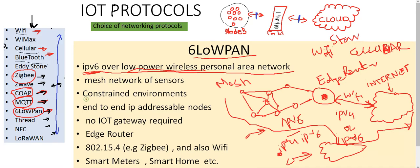6LoWPAN is also using a constrained environment, for example, for low-power, small, tiny nodes, and where you cannot use Wi-Fi or other high-powered communication protocols, you use 6LoWPAN.